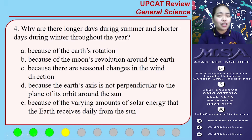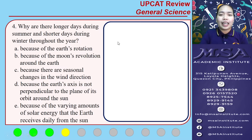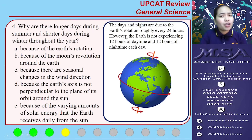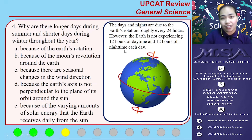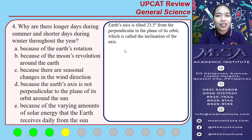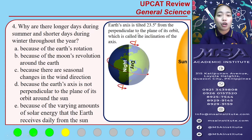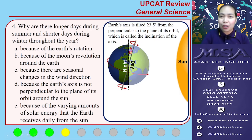Why are there longer days during summer and shorter days during winter throughout the year? Days and nights are due to the Earth's rotation roughly every 24 hours. However, the Earth does not experience exactly 12 hours of daytime and 12 hours of nighttime each day. The variation of daylight throughout the year is because the Earth's axis is tilted 23.5 degrees from the perpendicular to the plane of its orbit, which is called the inclination of the axis.